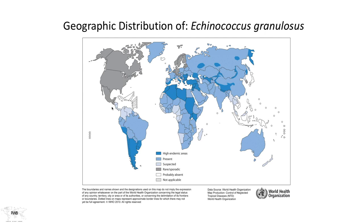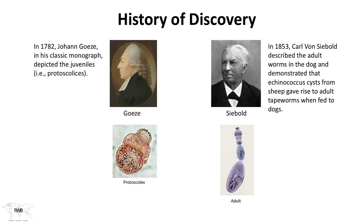Now let's discuss another larval tapeworm infection: Echinococcus granulosus. The distribution of Echinococcus granulosus, the dog tapeworm, follows the distribution of sheep husbandry and reindeer husbandry throughout the world, including Greenland. The association of sheep, dogs, and people forms a triad of ecology for the spread of this disease — from dogs to sheep, and sometimes from dogs to people. The parts of the parasite were long known, but it wasn't until much later that they were assembled into a coherent life cycle story. Gerza observed the protoscolex in large cysts from infected sheep, while Siebold identified the adult worm as a dog tapeworm rather than a human tapeworm.